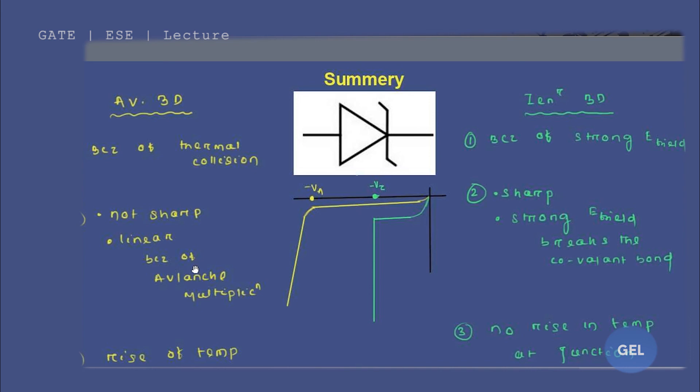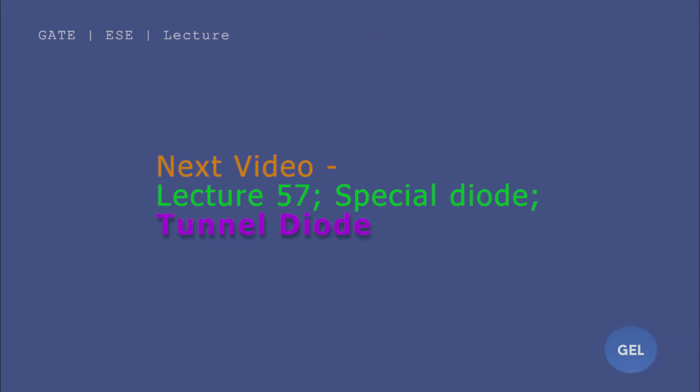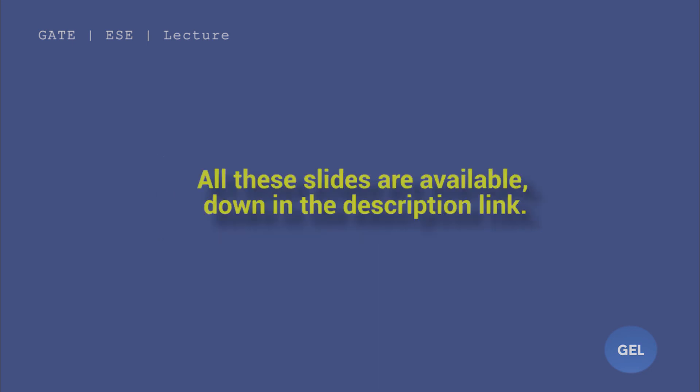Those are the key points for avalanche breakdown and Zener breakdown. We put a lot of hard work and time into preparing these materials so you can understand every concept and get a good rank. Please press the like button and subscribe to our channel JL Gate ESC Lecture. Thank you for watching — see you in the next lecture on tunnel diode. Bye!